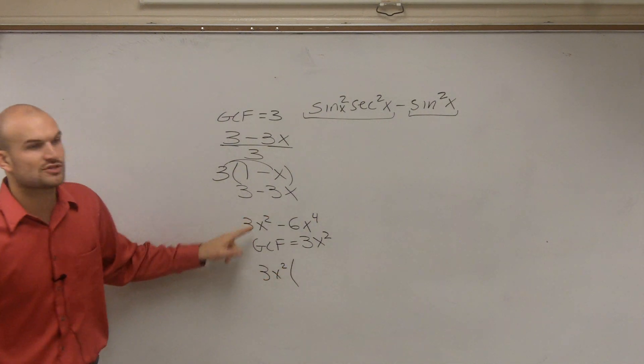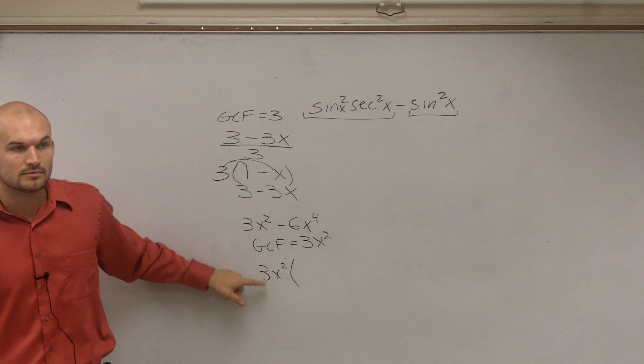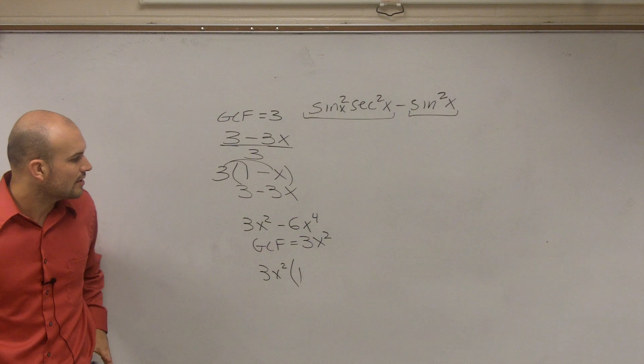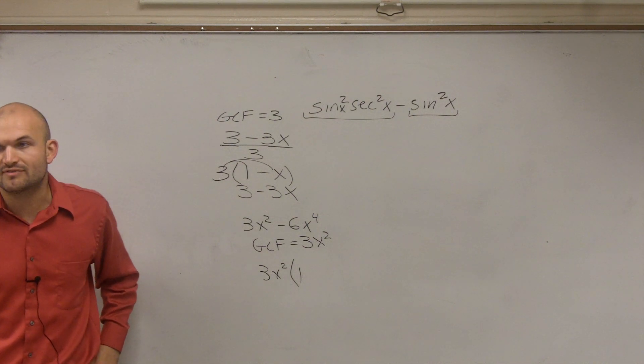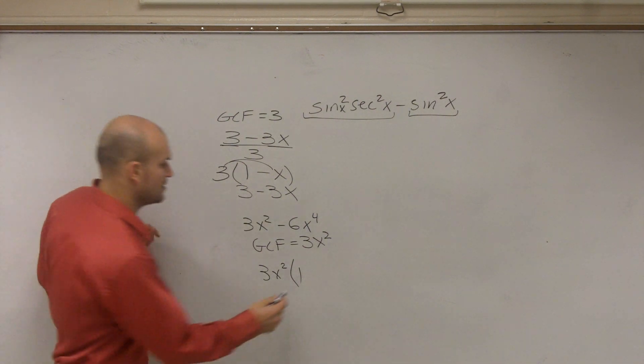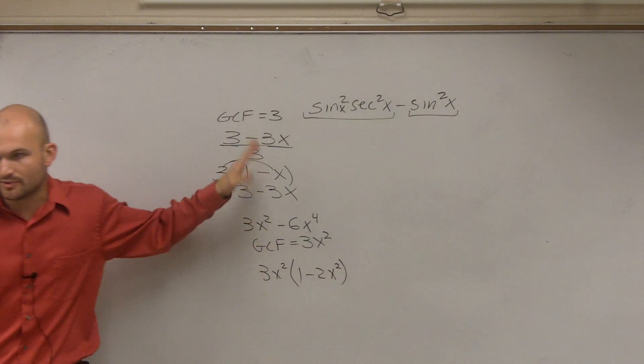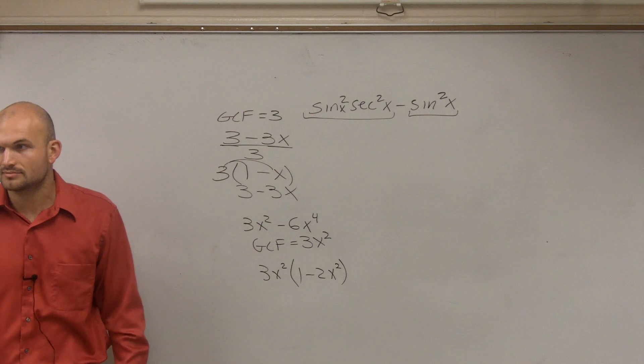So what is 3x squared divided by 3x squared? 1. What is negative 6x to the fourth divided by 3x squared? Negative 2x squared. All right. You guys got me with polynomials.